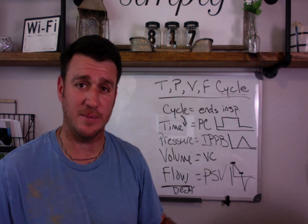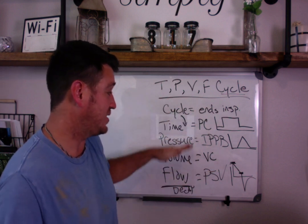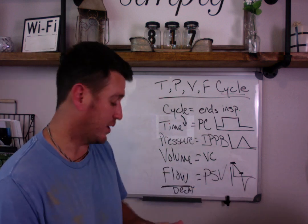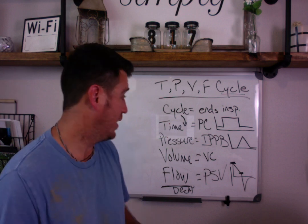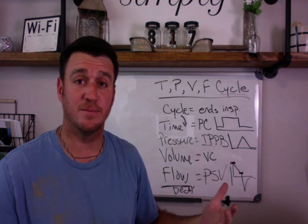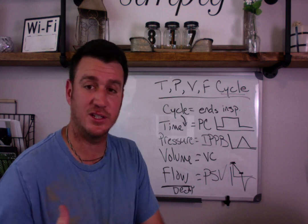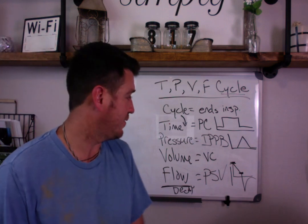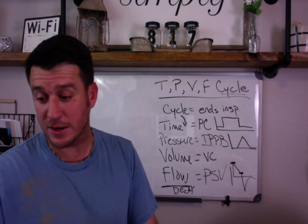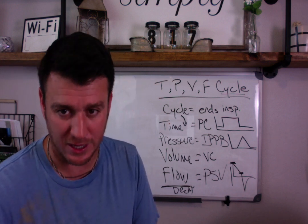Those are the different cycle mechanisms and the vent modes associated with each, with the exception of IPPB, which isn't a vent mode but is a therapy that operates off pressure cycling. You could also add BiPAP under time cycling, because BiPAP is a time-cycled mode — when the set inspiratory time is reached, it cuts off into exhalation. Hope this helps, and if not, give me another question and I'll clarify it even further. Hope everybody's having a great day.